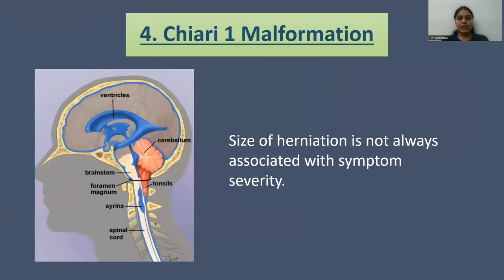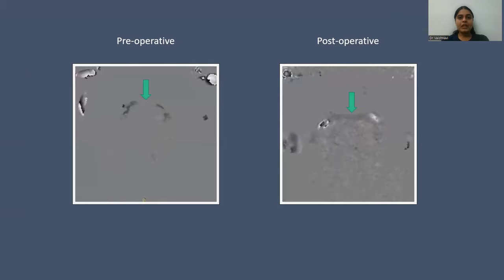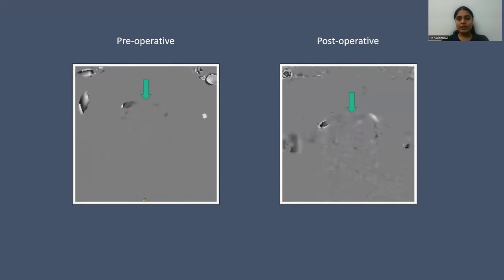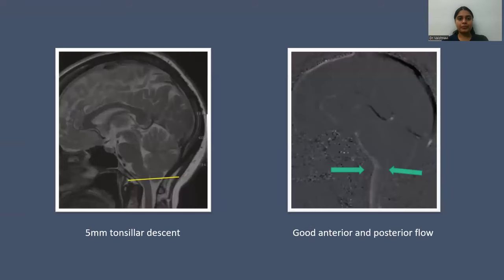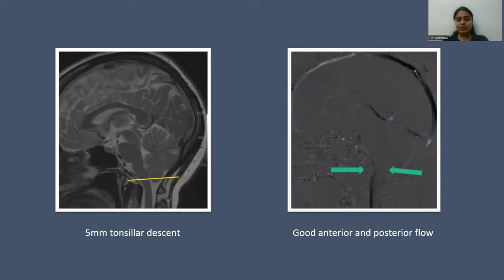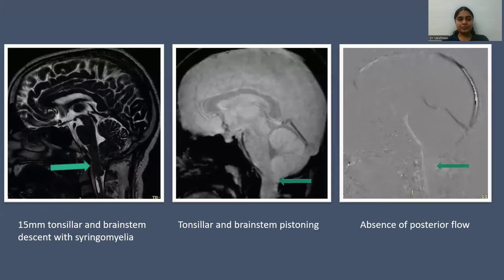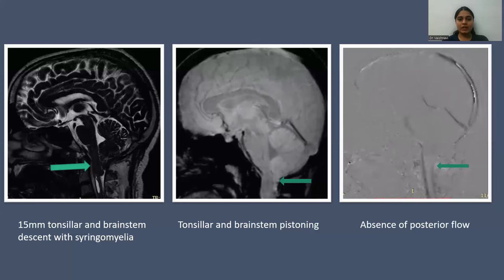In Chiari-1 malformation, as we can see, there is herniation of the brainstem as well as the tonsils below, which leads to effacement of the anterior as well as the posterior subarachnoid space. The size of the herniation is not always associated with symptom severity. In the pre-operative patient, there is no flow across the anterior subarachnoid space, and in the post-operative patient, post-surgical decompression, there is good to-and-fro flow. In 5 mm tonsillar descent, there is good anterior and posterior flow, meaning that less tonsillar descent results in less effacement.